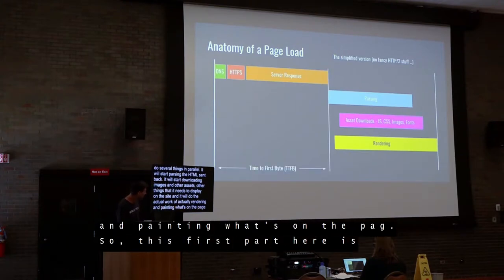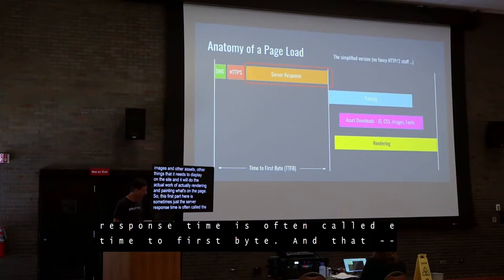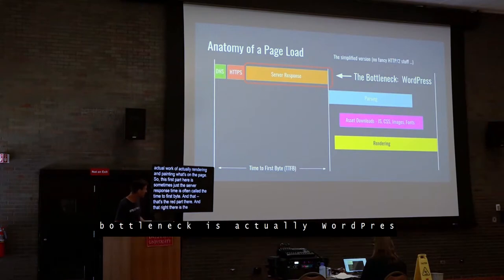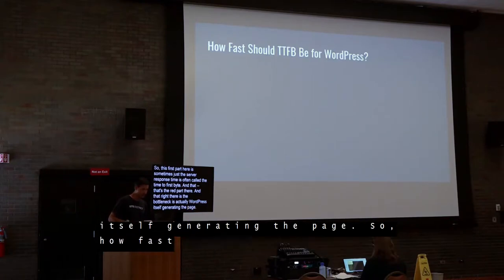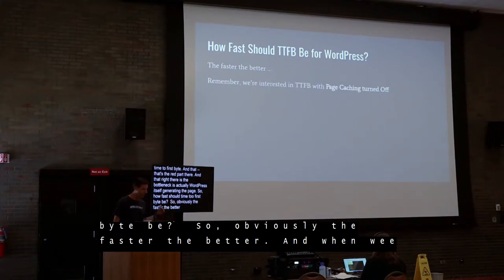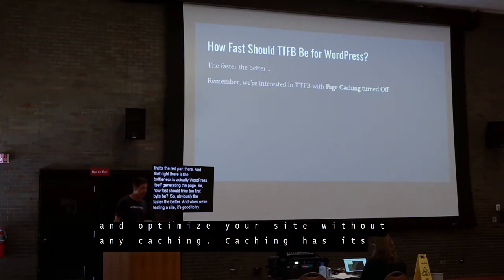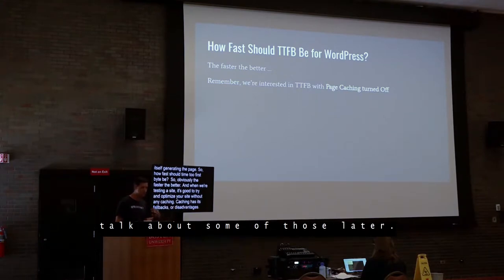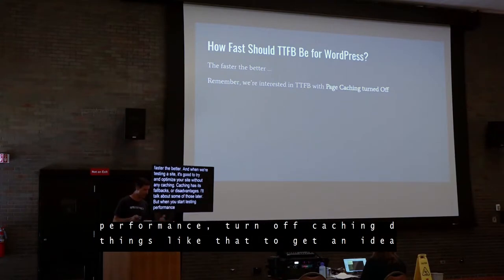This first part — the server response time — is often called the time to first byte. The bottleneck here is actually WordPress itself generating the page. How fast should time to first byte be? Obviously, faster is better. When testing a site, it's good to optimize without any caching first. Turn off caching and other things so you can get an idea of the raw performance of your site and get a baseline.